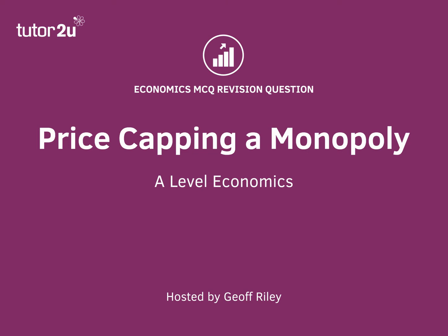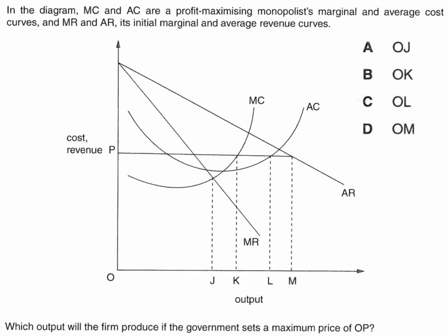This type of question is an interesting one — it's about the price cap in a monopolistic market. In the diagram, MC and AC are a profit maximising monopolist's marginal and average cost curves, and MR and AR are its initial marginal and average revenue curves. The question asks: which output will the firm produce if the government sets a maximum price of OP? Have a go, press the pause button, and come back in a few seconds.